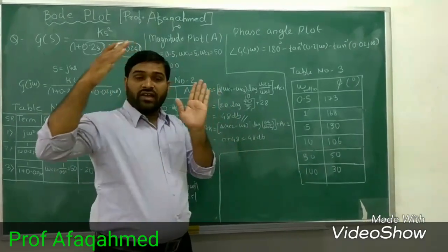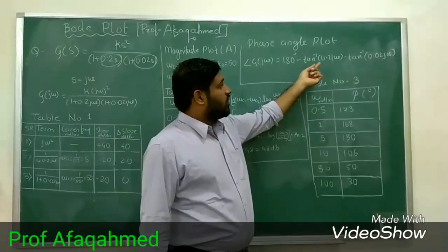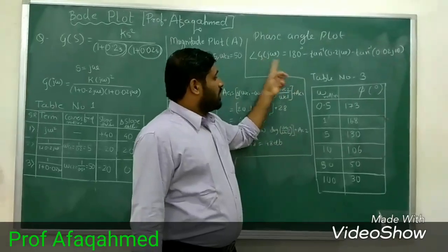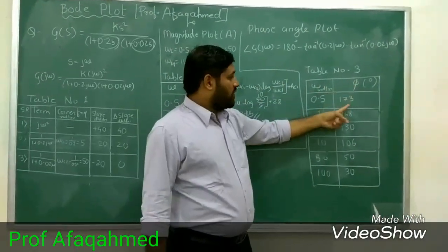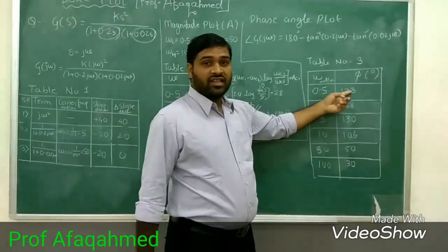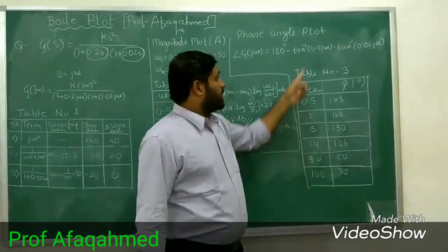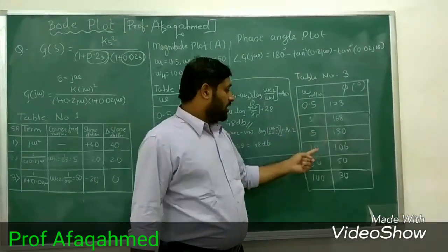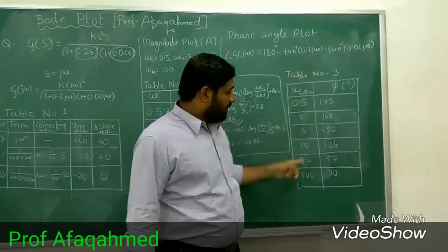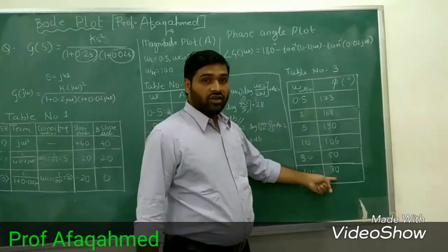Substituting all values of omega into the phase angle formula: for ω = 0.5, φ = 173°; for ω = 1, φ = 168°; for ω = 5, φ = 130°; for ω = 8 (approximately 10), φ = 106°; for ω = 10, φ = 50°; for ω = 100, φ = 30°.